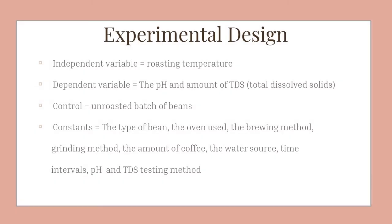The independent variable was the roasting temperature. The dependent variable was the pH amount and the amount of total dissolved solids. The control was the unroasted batch of beans. Constants were everything from the oven used, the type of coffee bean, the brewing method, the amount of coffee, the grinding method, the water source, time intervals, and the testing methods of pH and total dissolved solids.